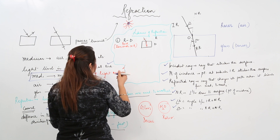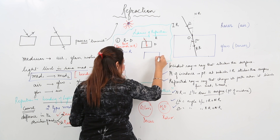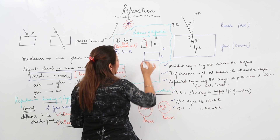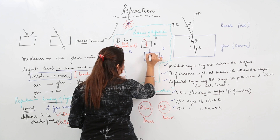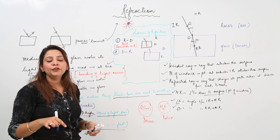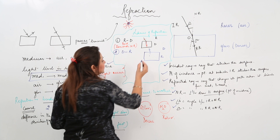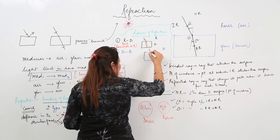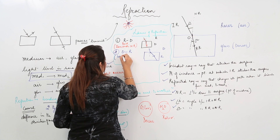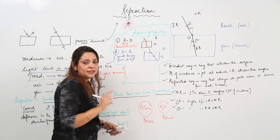The second rule: when light passes from denser to rarer medium, the density is less in rarer medium, so the speed increases, and the light bends away from the normal. So the angle of refraction is greater than the angle of incidence when light passes from denser to rarer.